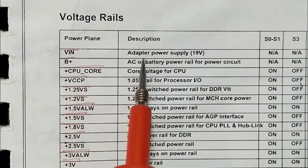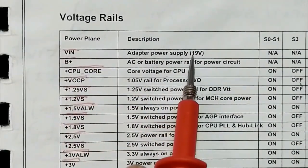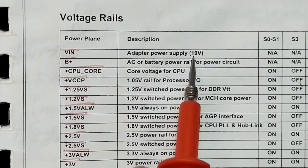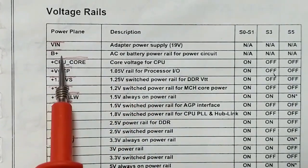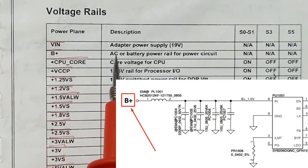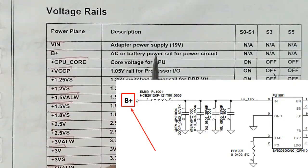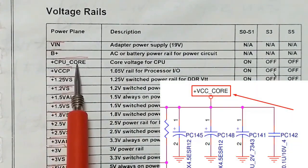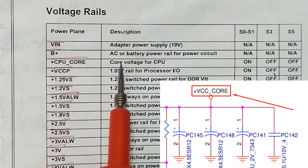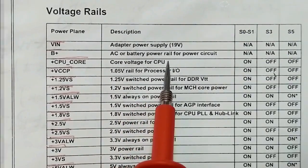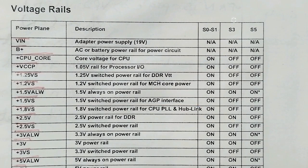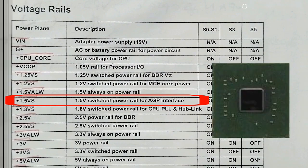We have V-in, meaning the adapter power supply at 19 volts — it could be 20 volts but usually 19 volts. B+ in the schematic means the AC or battery power rail for the power circuit. Plus CPU core means the core voltage for the CPU or processor. 1.5 volts is the power rail for the AGP interface, so this power is for the graphic cards.